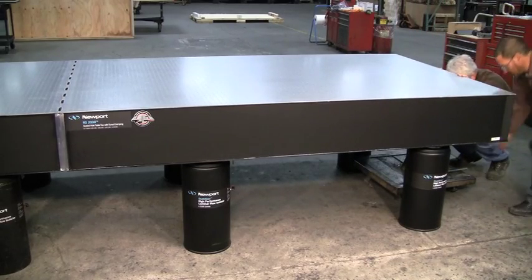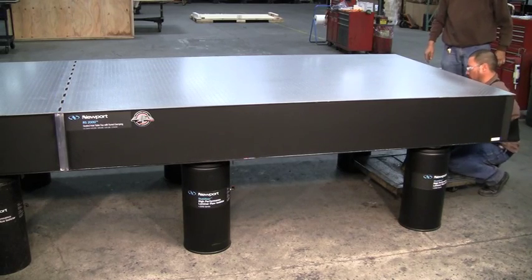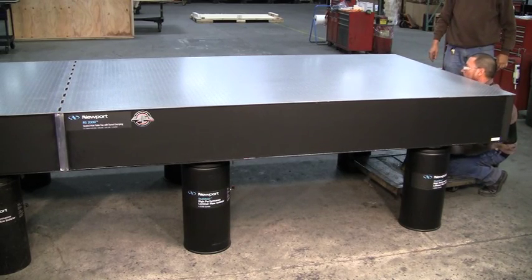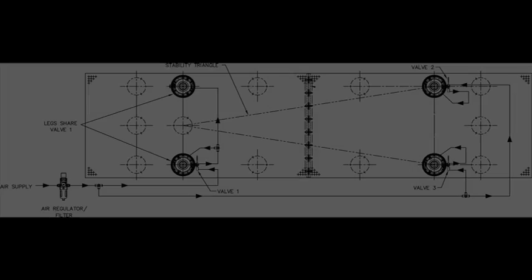Final support leg and leveling valves are determined by table system shape and load distribution. As a reference, here are a few of the most popular custom table configurations and the recommended leg and valve locations.